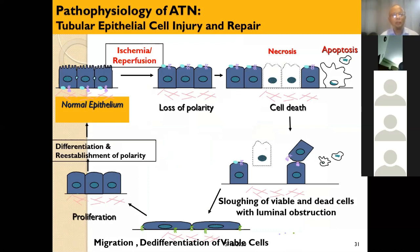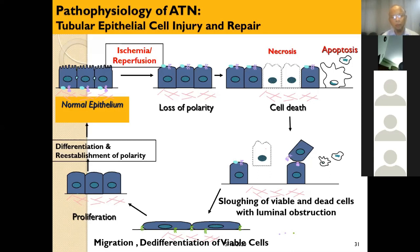In the pathophysiology of ATN, tubular epithelial cell injury due to ischemia leads to necrosis and apoptosis. There is sloughing of viable and dead cells causing luminal obstruction. The remaining viable cells migrate, de-differentiate, and proliferate — ultimately differentiating and re-establishing polarity, resulting in normal epithelia. If you can manage this patient during this period — which may be one week, two weeks, or even more — normal cells will proliferate, viable cells will differentiate, and will cover the necrotic and apoptotic areas.